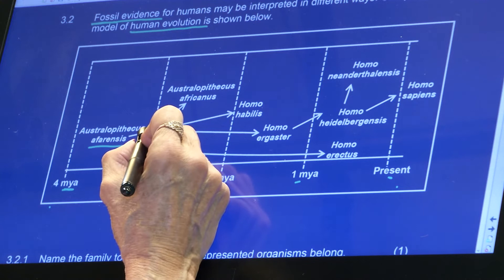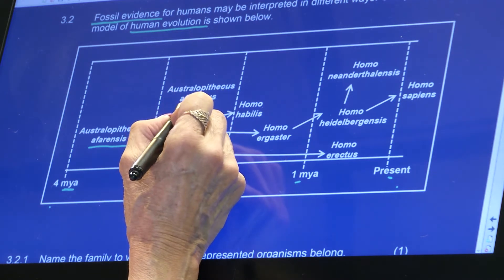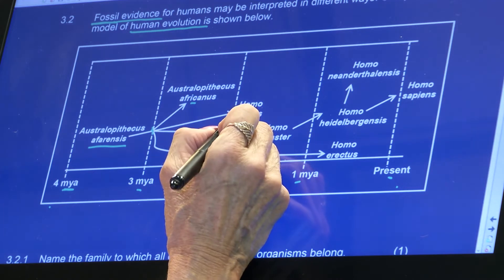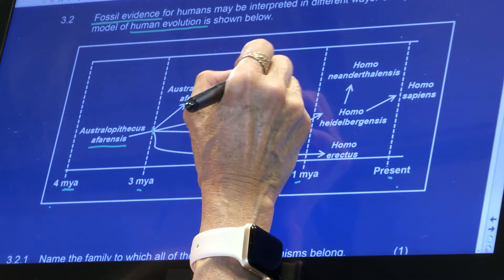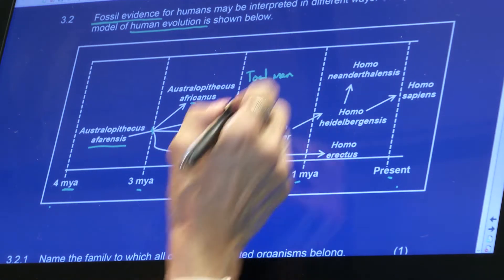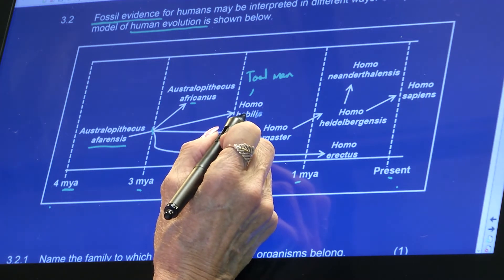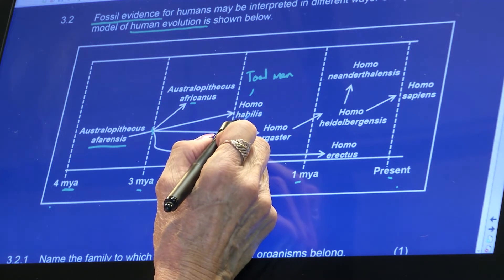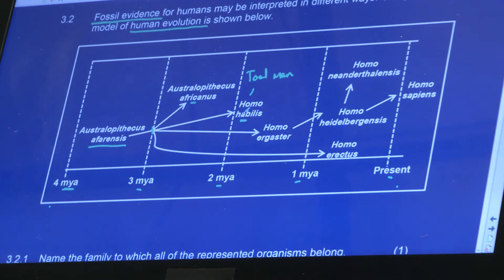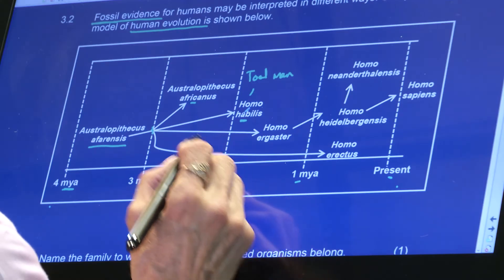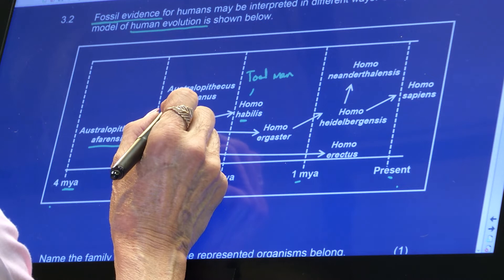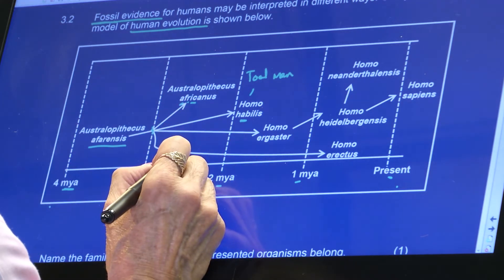That line split into Australopithecus africanus and Homo habilis. Homo habilis is known as the tool man — they were the first to use and make tools to survive: needles, flints. Homo habilis — just think of habitat as your home, that's how I remember it. Tool man Homo habilis. Australopithecus africanus sort of went off and died off around there.